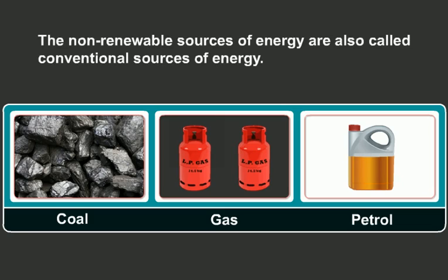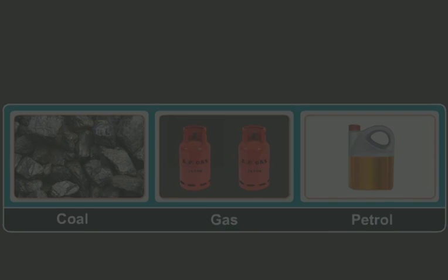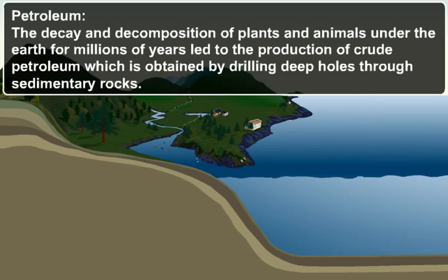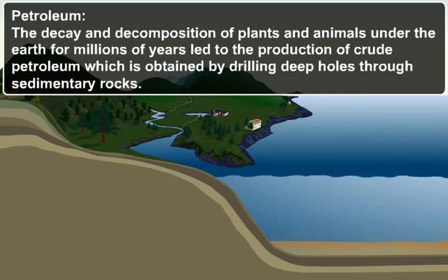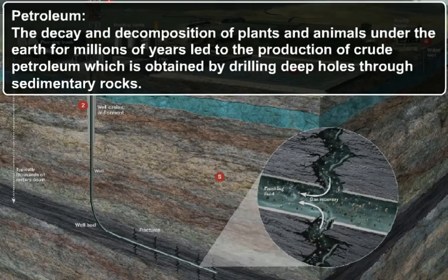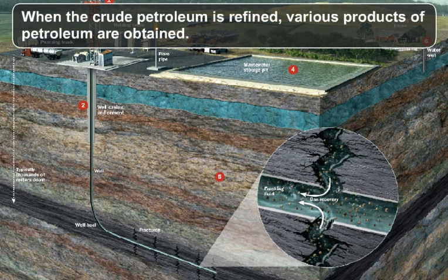Non-renewable sources of energy are also called conventional sources of energy, and human beings have been using these since ages. The decay and decomposition of plants and animals under the earth for millions of years led to the production of crude petroleum, which is obtained by drilling deep holes through sedimentary rocks. When crude petroleum is refined, various products of petroleum are obtained.